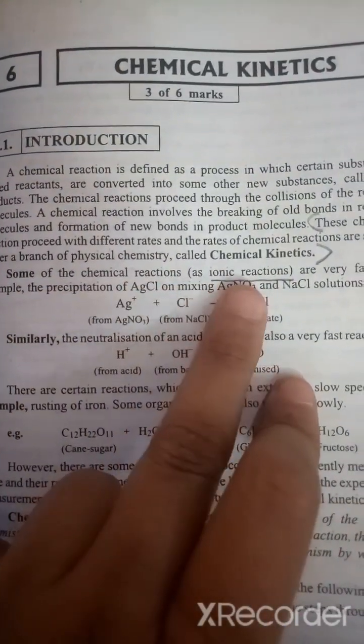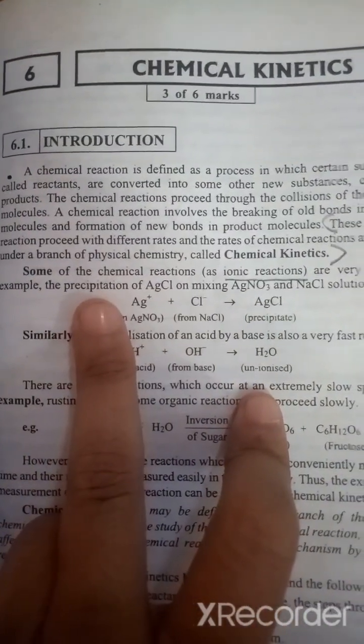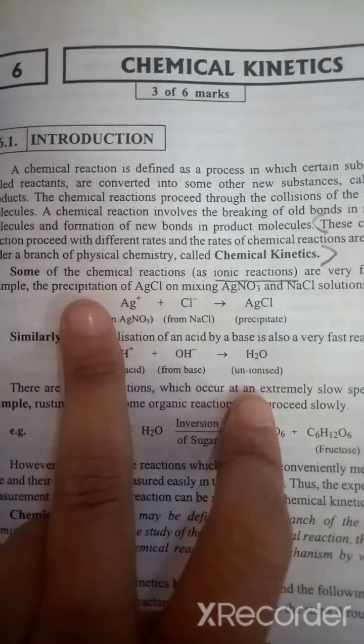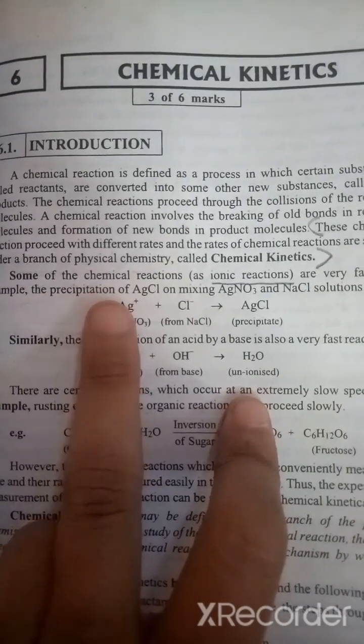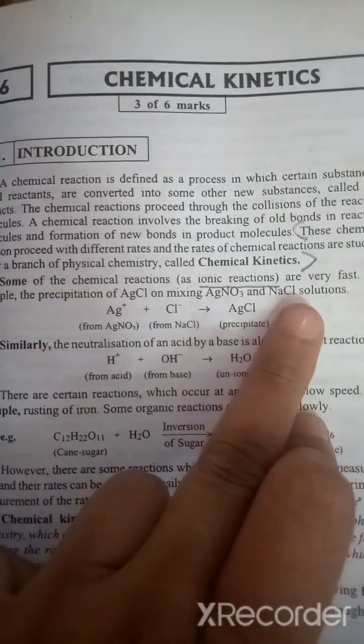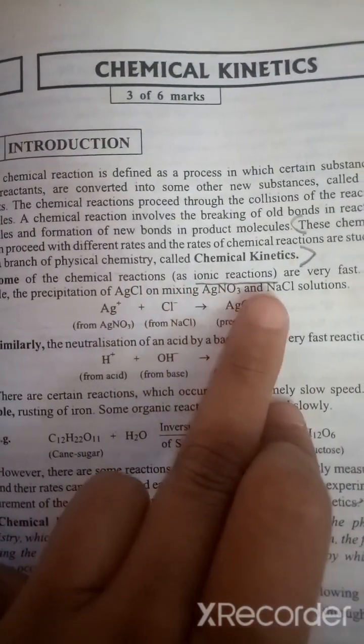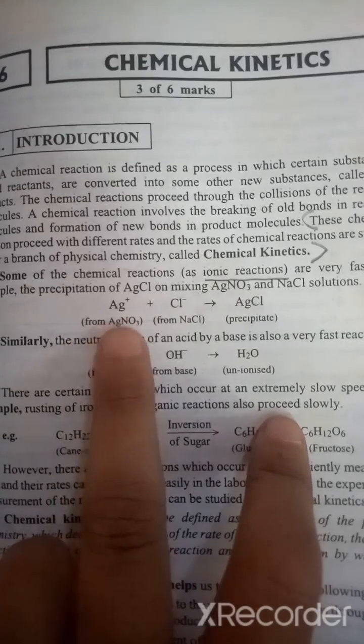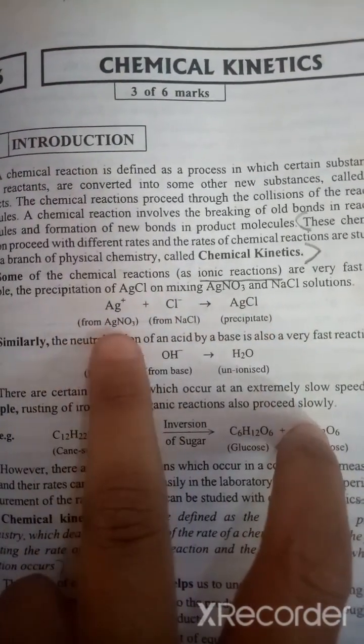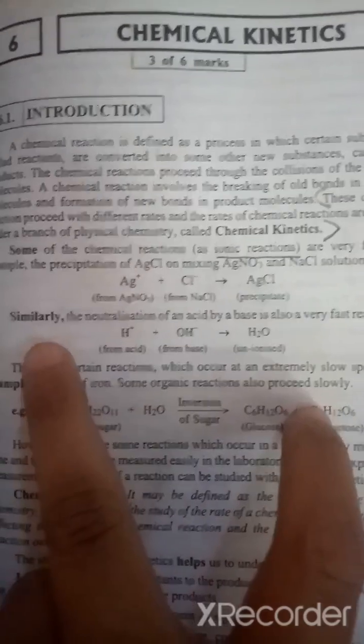Some chemical reactions like ionic reactions are very fast. For example, precipitation. If you ask about precipitation, it is very easy. AgCl, precipitation of AgCl on mixing AgNO3 and NaCl solution. Now, you know Ag plus Cl minus precipitate. AgNO3 from NaCl.